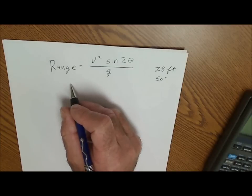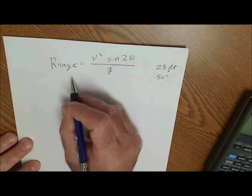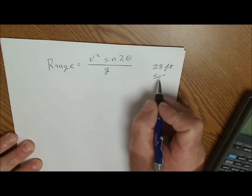The equation we're going to use is range, a physics equation. Range is equal to velocity squared sine of 2 theta divided by gravity. We measured the distance at 28 feet at an angle of 50 degrees.